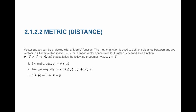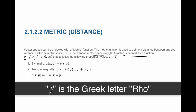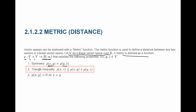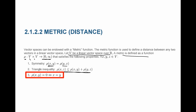The metric function, denoted rho, is defined on a linear vector space V. It takes two vectors and gives a non-negative real number, satisfying: (1) symmetry — the distance between x and y equals the distance between y and x; (2) the triangle inequality — the distance between x and z is less than or equal to the distance between x and y plus the distance between y and z; and (3) identity of indiscernibles — x equals y if and only if the distance between them equals zero.